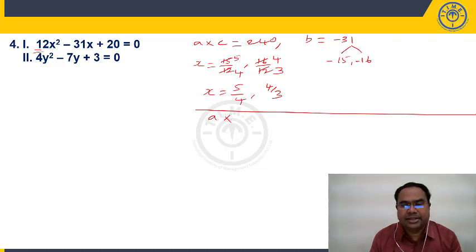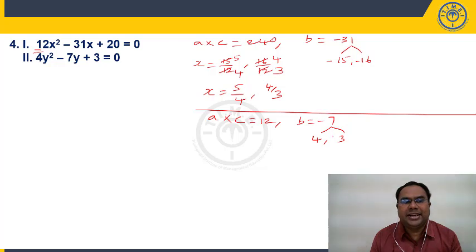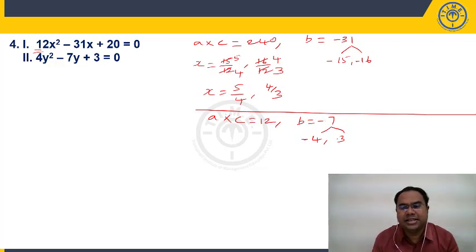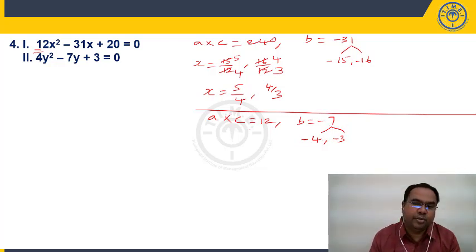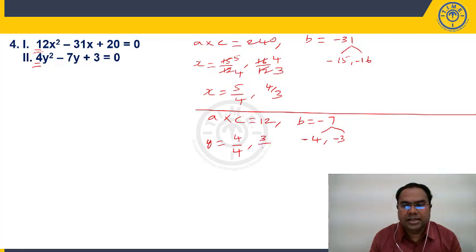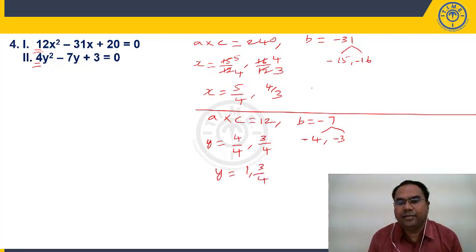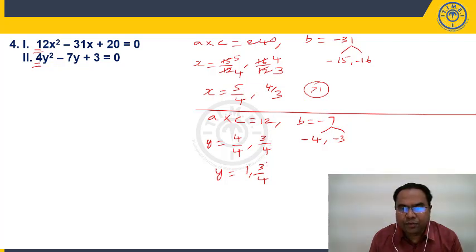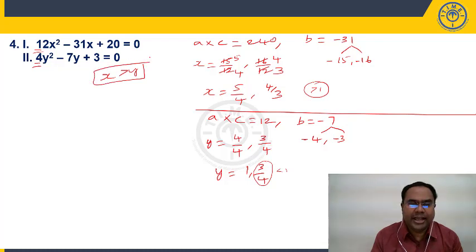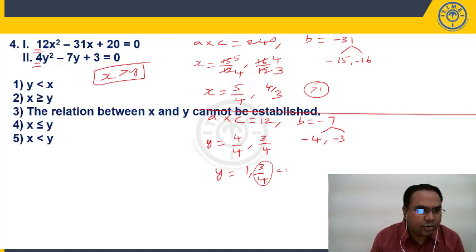Second equation: 4Y² − 7Y + 3 = 0. A×C = 4×3 = 12, B = −7. Use 4 and 3: 4×3=12, 4+3=7. Since B = −7, take −4 and −3. Change signs: +4 divided by 4 = 1. +3 divided by 4 = 3/4. Roots of Y: 1, 3/4. X roots 5/4=1.25 and 4/3=1.33 are both greater than Y roots 1 and 0.75. So X > Y. That is choice 1.